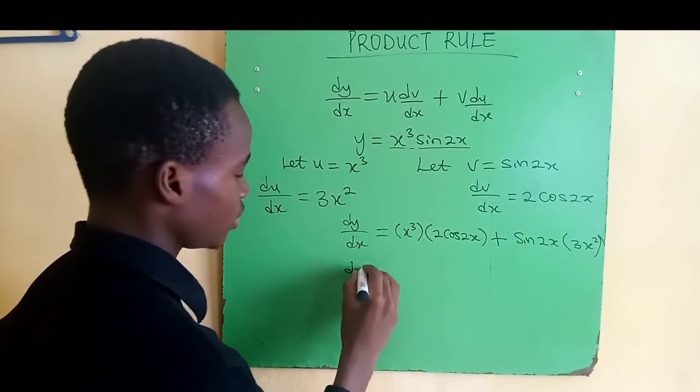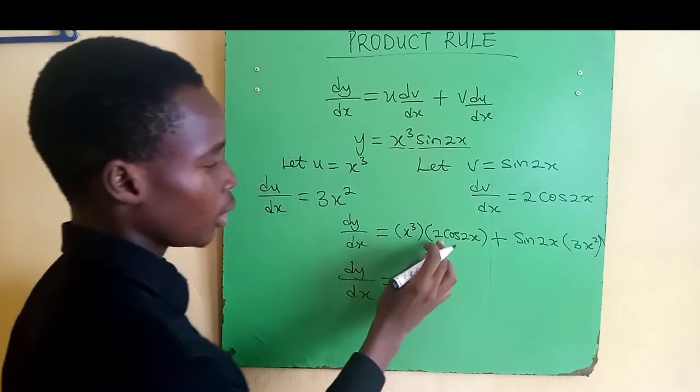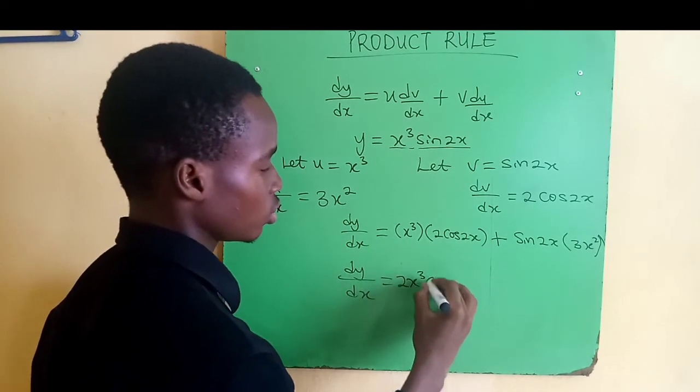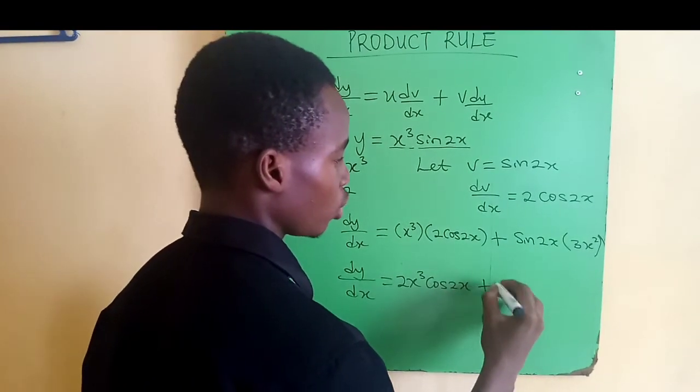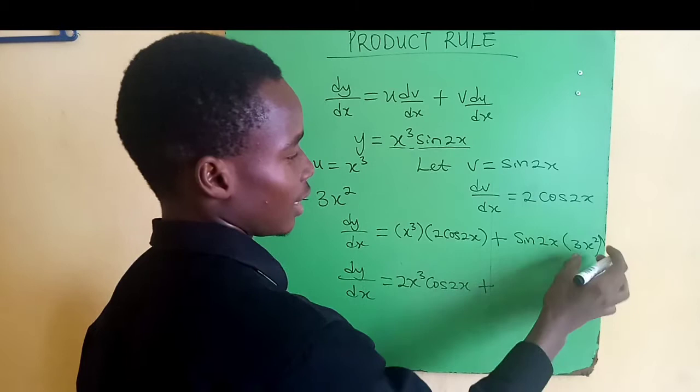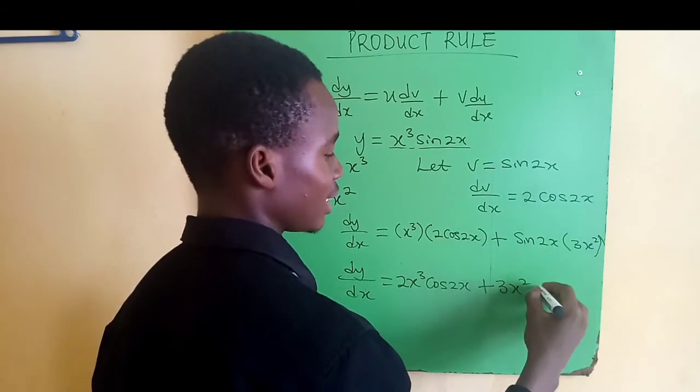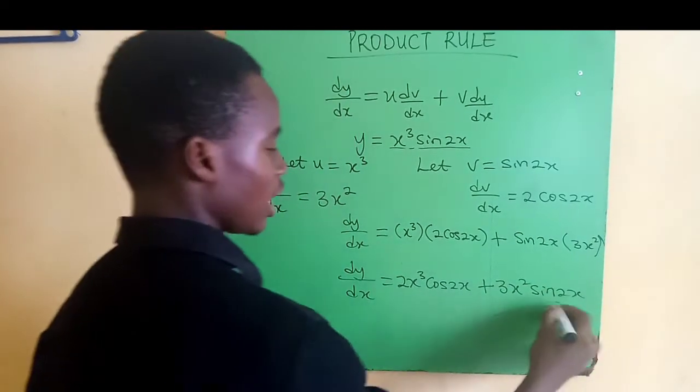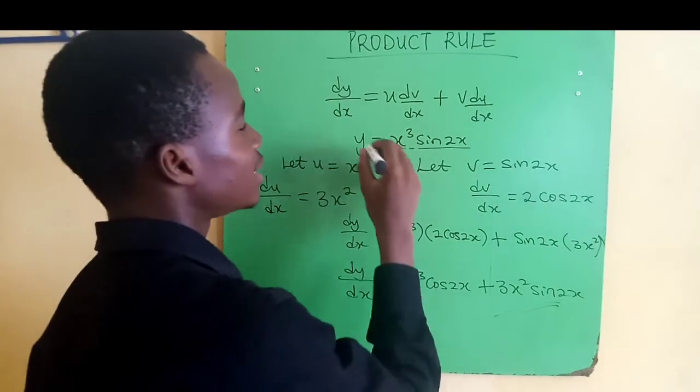You know our derivative dy/dx, it becomes 2 times x cubed is 2x cubed, so we have 2x cubed cos 2x plus, we want to bring this on board, we want to multiply them, this was 3x squared sine 2x. And now we have gotten the derivative of this function.